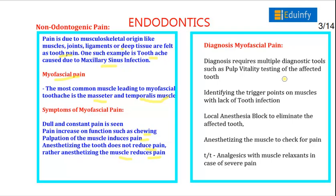Myofascial pain requires diagnostic tools such as pulp vitality testing of the affected tooth, identifying the trigger point of muscles with lack of tooth infection, and local anesthetic block to eliminate the affected tooth. Anesthesia is given to the muscle to check for pain. Treatment of myofascial pain includes analgesics with muscle relaxants in case of severe pain.